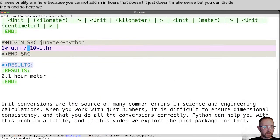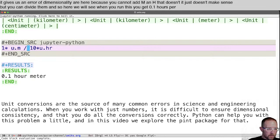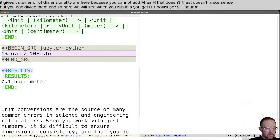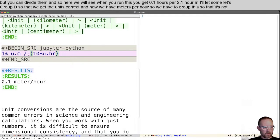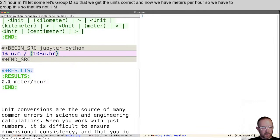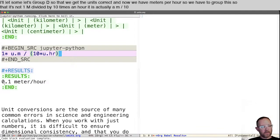But we can just divide them. And so here, we will see when you run this, you get 0.1 hour meters. Oh, let's group these so that we get the units correct. And now we have meters per hour. So we have to group this so that it's not one meter divided by 10 times an hour. It is actually a meter divided by 10 hours. That gives us this velocity of meter per hour.